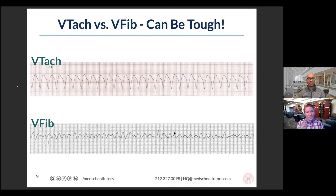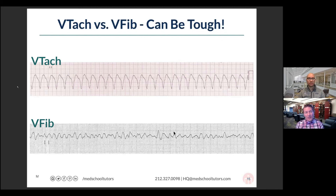If we have a re-entrant rhythm — electricity chasing its own tail — we usually have very clear, sharp lines. VTac and flutter are going to be very clear in their up-down motion as all the electricity moves in a synchronous fashion, just way too fast in a circle we can't control. Whereas with V-fib or AFib, electricity is basically randomly going through the ventricle or atrium, creating a very messy, undulating, uncoordinated baseline. V-fib looks like AFib, just big and without clearly visible QRS complexes.